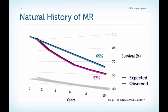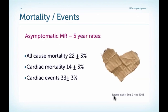The natural history of MR is shown in this diagram in a publication from many years ago, which shows that we have an excessive mortality in the presence of significant mitral regurgitation. In a more recent publication by Serrano 2005, he was able to show that the five-year rates for asymptomatic MR are 22% for all-cause mortality, 14% for cardiac mortality, and 33% for cardiac events. So MR is not a benign disease.